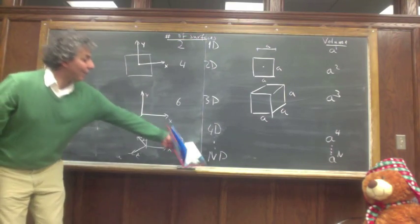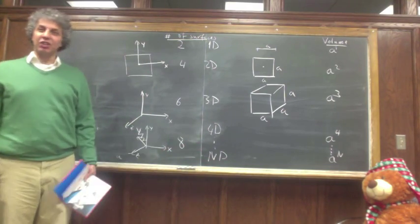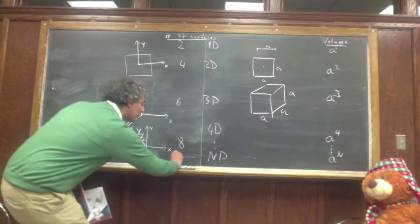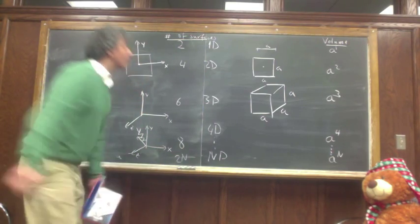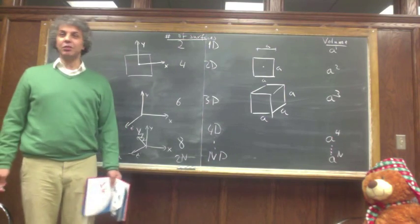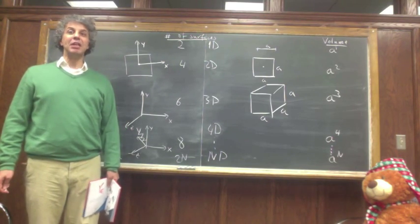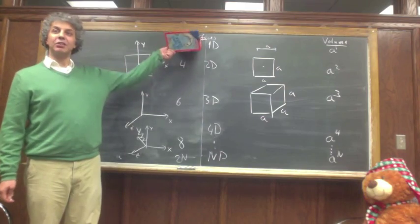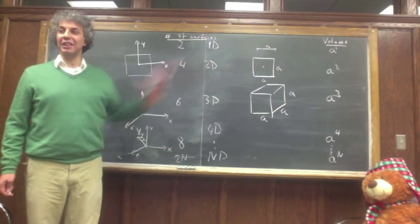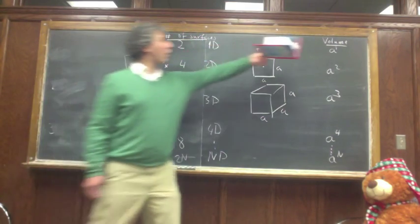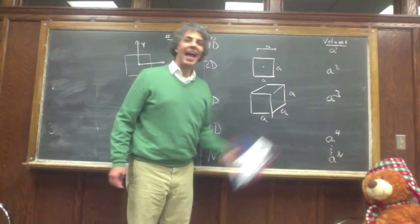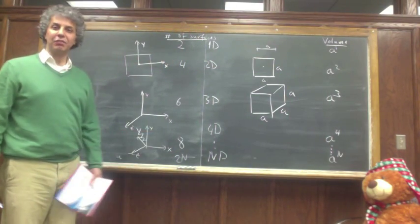If I go to n dimensions, I will have 2n surfaces. I think we know everything we need to know about an n-dimensional cube. We know their volume is a to the n, and there are 2n surfaces.